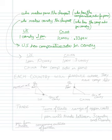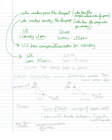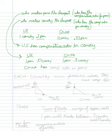For pens: in the U.S., 1 pen costs 10 candy, while in China 1 pen costs 3 candy. Who makes pens the cheapest? That would be China — because they give up the least. China has the comparative advantage in pens.